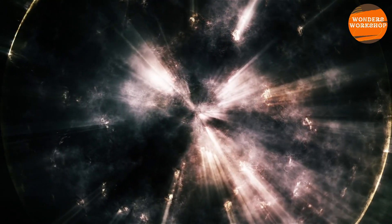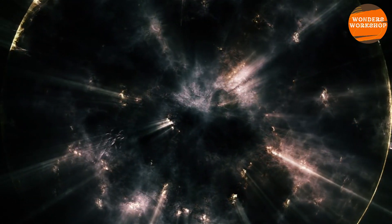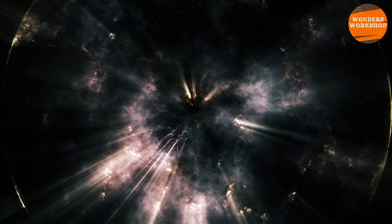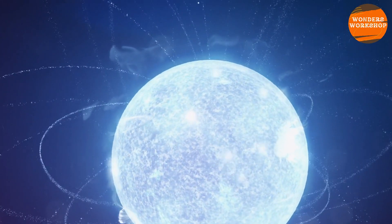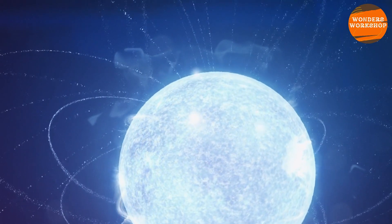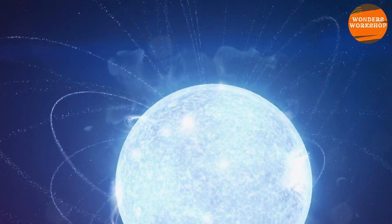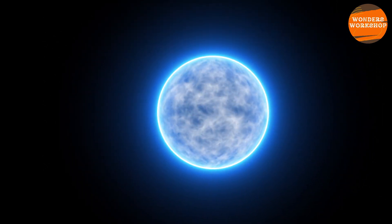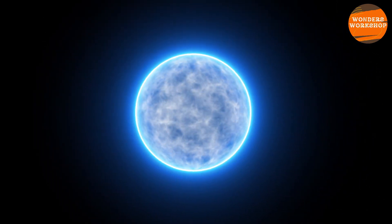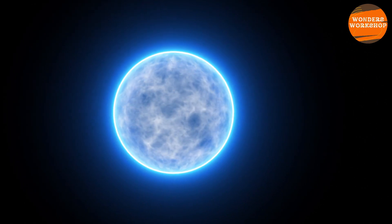A magnetar is a highly magnetized neutron star that forms when a massive star exhausts its nuclear fuel and collapses onto itself. During this process, the dense core of the star transforms into a neutron star composed mainly of electrically neutral neutrons.